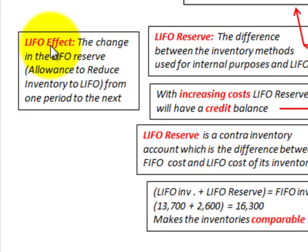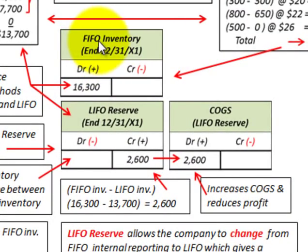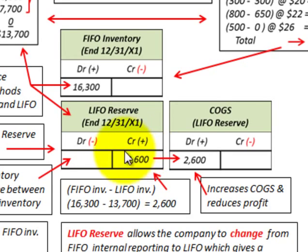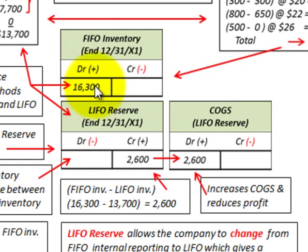One other thing to understand is the LIFO factor — that's the change in the LIFO reserve, or the allowance to reduce the inventory to LIFO from one period to the next. Essentially, we take our FIFO inventory debit amount and reduce it by that LIFO reserve of $2,600 to arrive at what our LIFO inventory would be worth, based on the difference between a FIFO of $16,300 and a LIFO reserve of $2,600. Any increases or decreases in the LIFO reserve are going to affect the FIFO inventory recorded on our balance sheet.